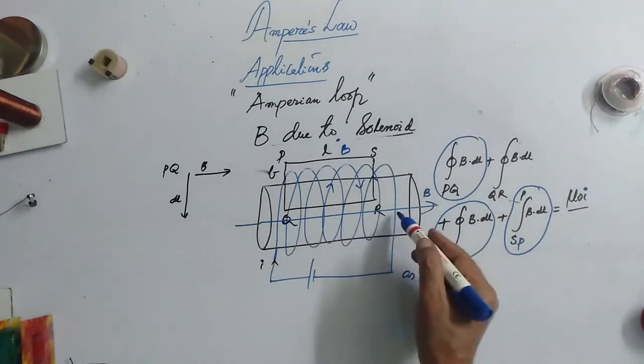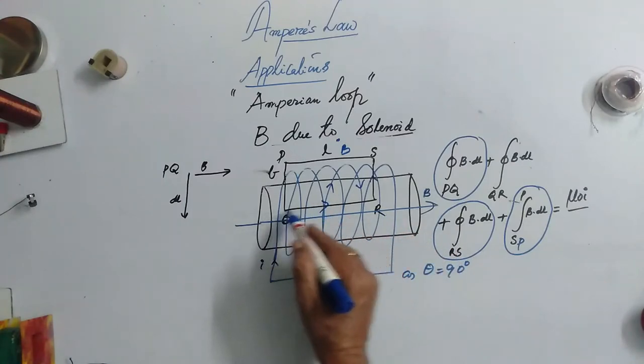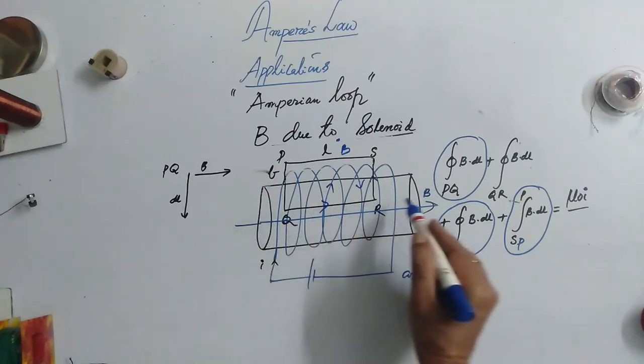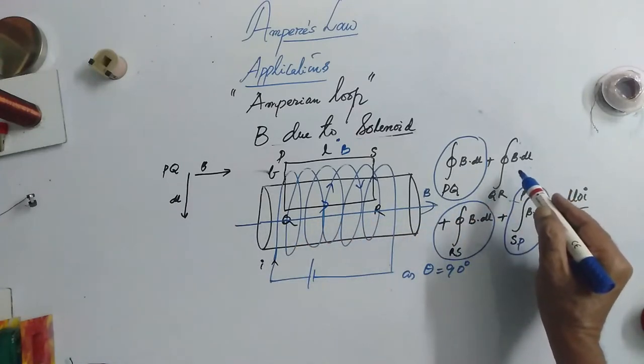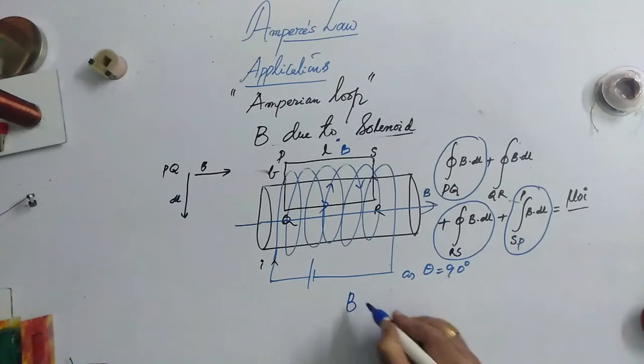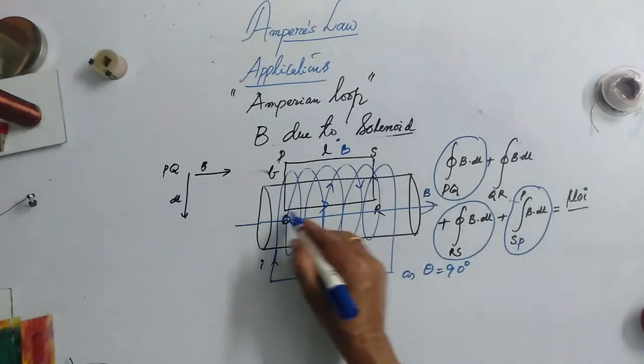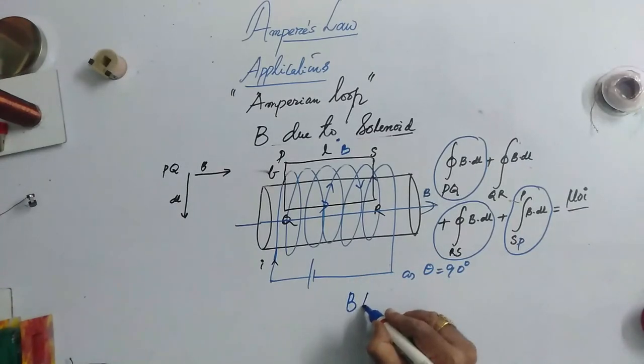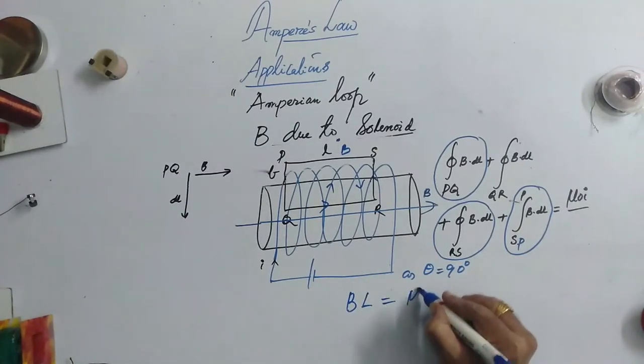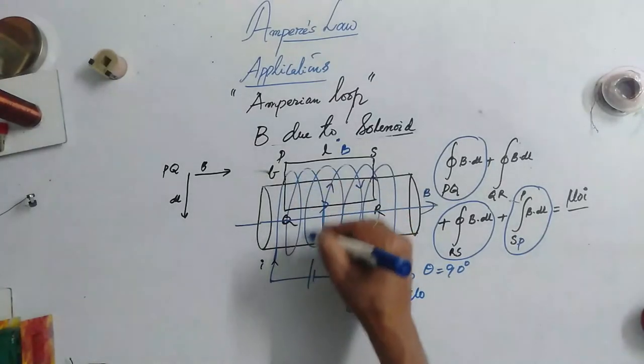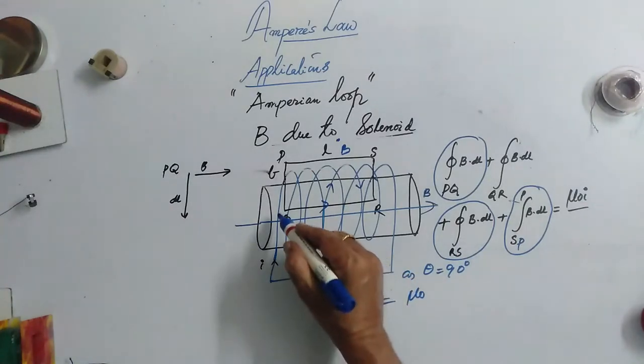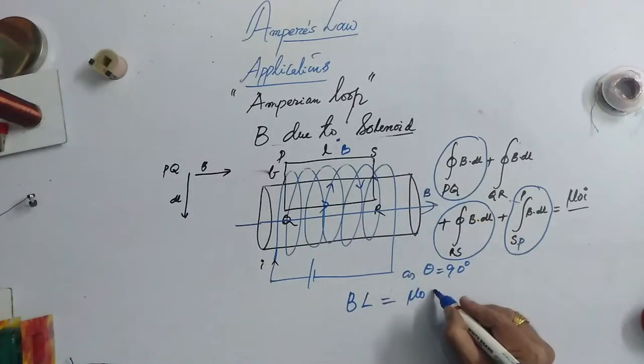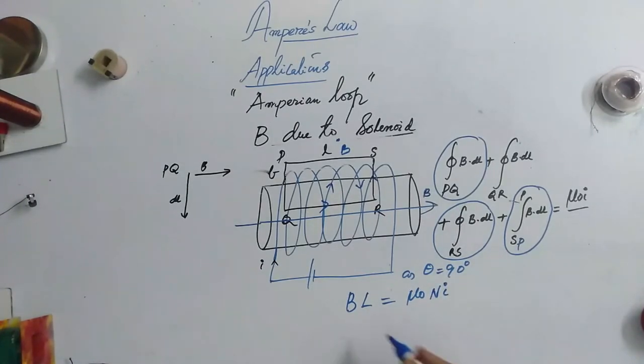Now, what is left out along QR? If you observe this QR, L is also in the same direction, B also in the same direction. Therefore, this angle would be 0. Therefore, integral B·DL cos 0, integral over DL is nothing but L should be equal to mu 0. Here, the current through one loop is I but if the total number of loops is N, then this will be equal to mu 0 times of NI.